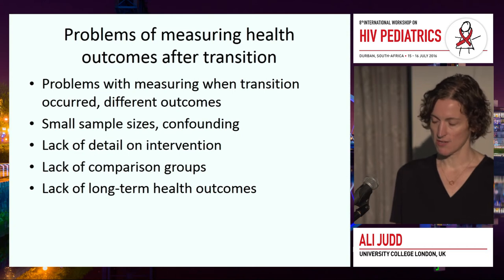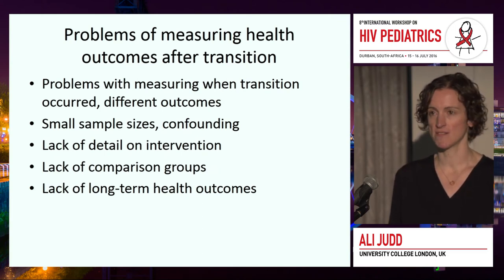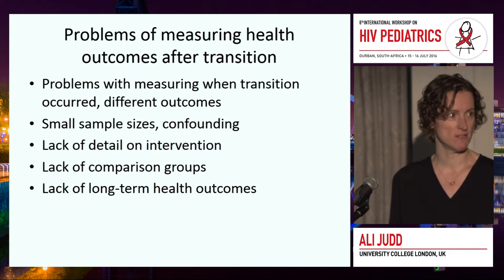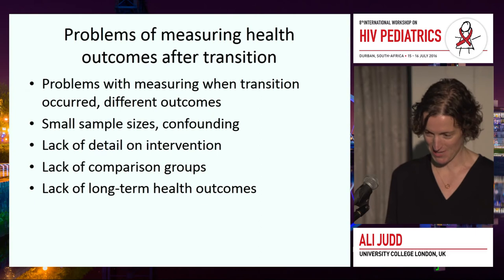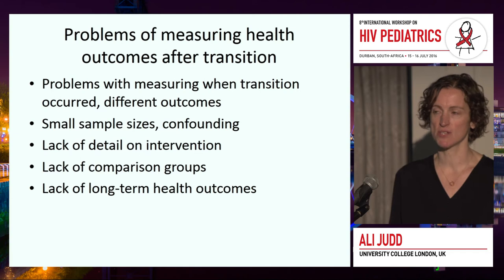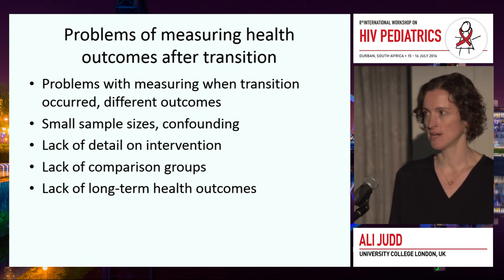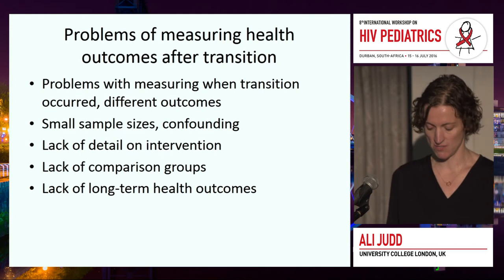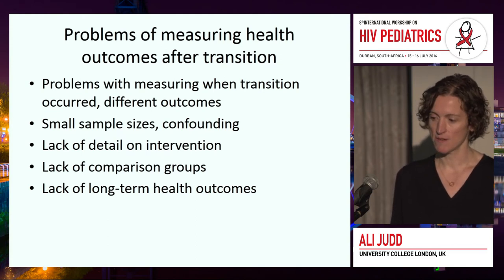So why aren't there more studies measuring health outcomes after transition? Several issues complicate matters. Firstly, problems with measuring when transition occurred — it's often a process, not a defined time point. People have used different outcomes: we used CD4, others have used retention or viral load. There have been really small sample sizes unable to adjust for confounding. Studies often don't describe the background context or what interventions are offered. Studies often don't have comparison groups, and there's definitely been a focus on short-term rather than long-term outcomes.